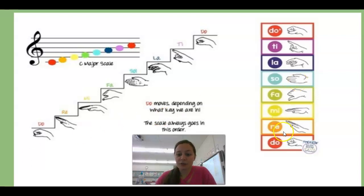So if you look over here at our ladder first, remember that so and me are a skip. It's a skip because fa is in between. And so and law are a step because they're right next to each other. And you can physically see that on our staircase. Me to so, you got to skip a step because fa is in between. And so to law are one step apart.